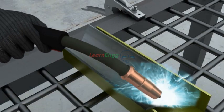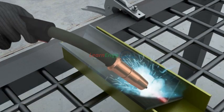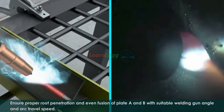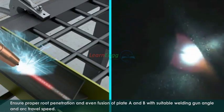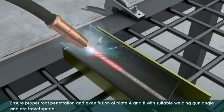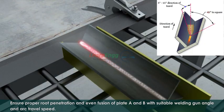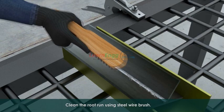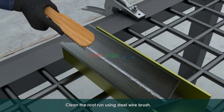Weld the root run of the joint by using 0.8mm diameter wire. Ensure proper root penetration and even fusion of plate A and B with suitable welding gun angle and arc travel speed. Clean the root run using steel wire brush.